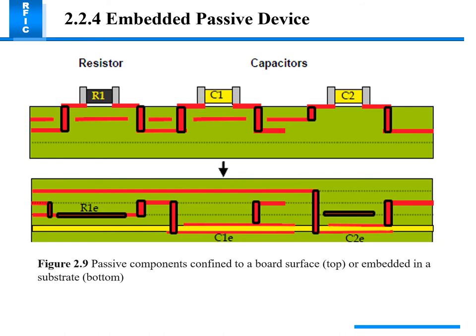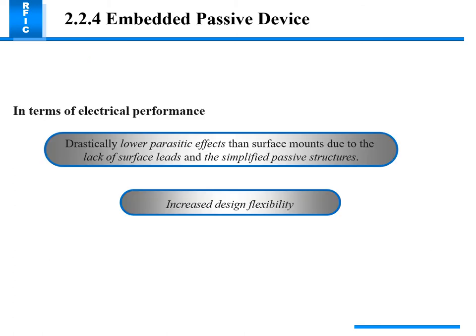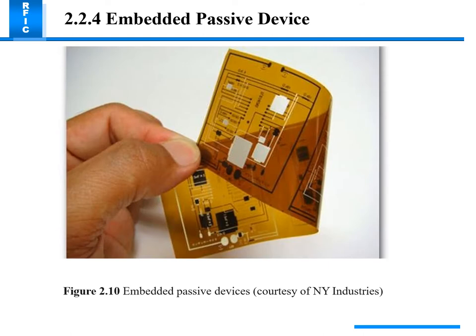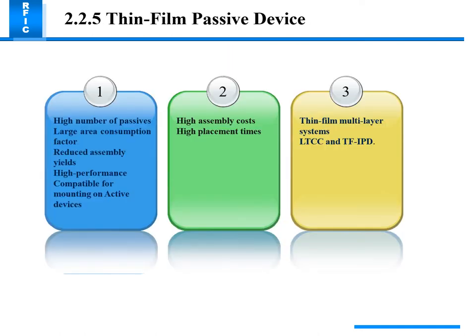Embedded passive devices such as resistors and capacitors connected in different methods come from the board surface embedded within. In terms of electrical performance, embedded passive devices drastically lower parasitic effects due to lack of surface leads. Thin film passive devices have a high number of passives, large area consumption, reduced assembly, increased yield, high performance capability for mounting on active devices, but high assembly cost and high placement time in thin multi-layer systems.